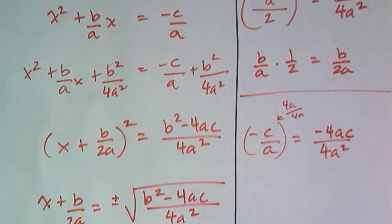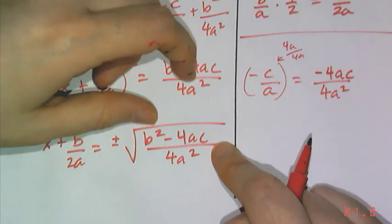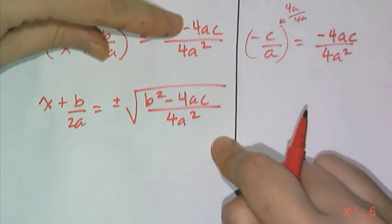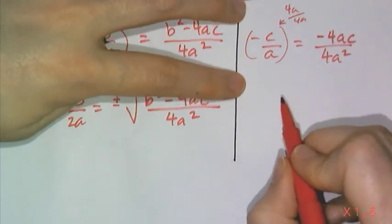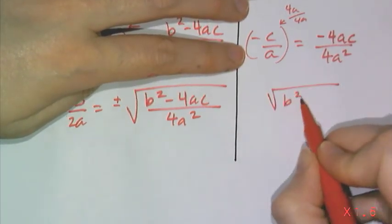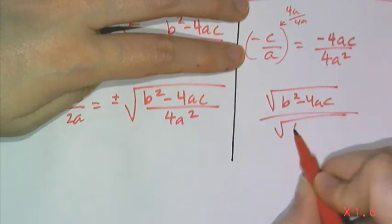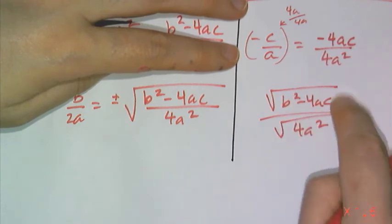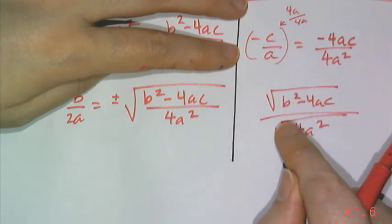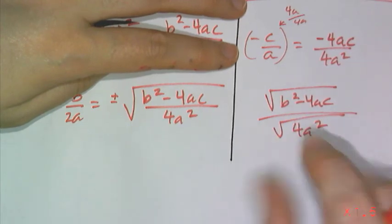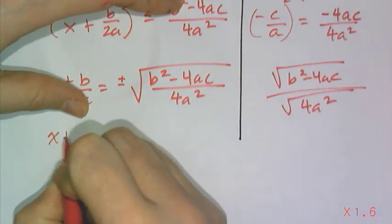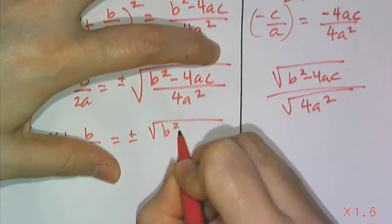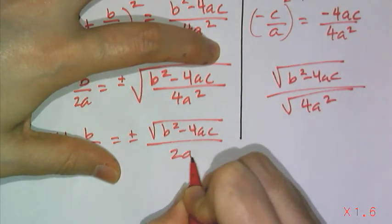Now there is a rule that says we do not like fractions under the radical. So we use the quotient property to split that up and so when I split it up over here with some side work it's going to be b squared minus 4ac square rooted over the square root of 4a squared. And this of course b squared minus 4ac the discriminant can't be simplified but 4a squared becomes 2a and so then I have x plus b over 2a equals plus or minus the square root of b squared minus 4ac over 2a.